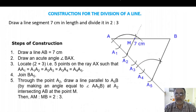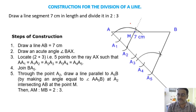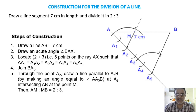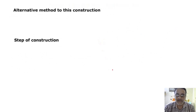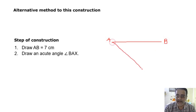Now we are moving towards the next page. Alternative method. Now I am telling an alternate method for the same question. One more alternate method is there. So watch carefully - that is also a very interesting one. What we will do: we will draw a line segment and draw an acute angle. You can draw 60 degrees also.